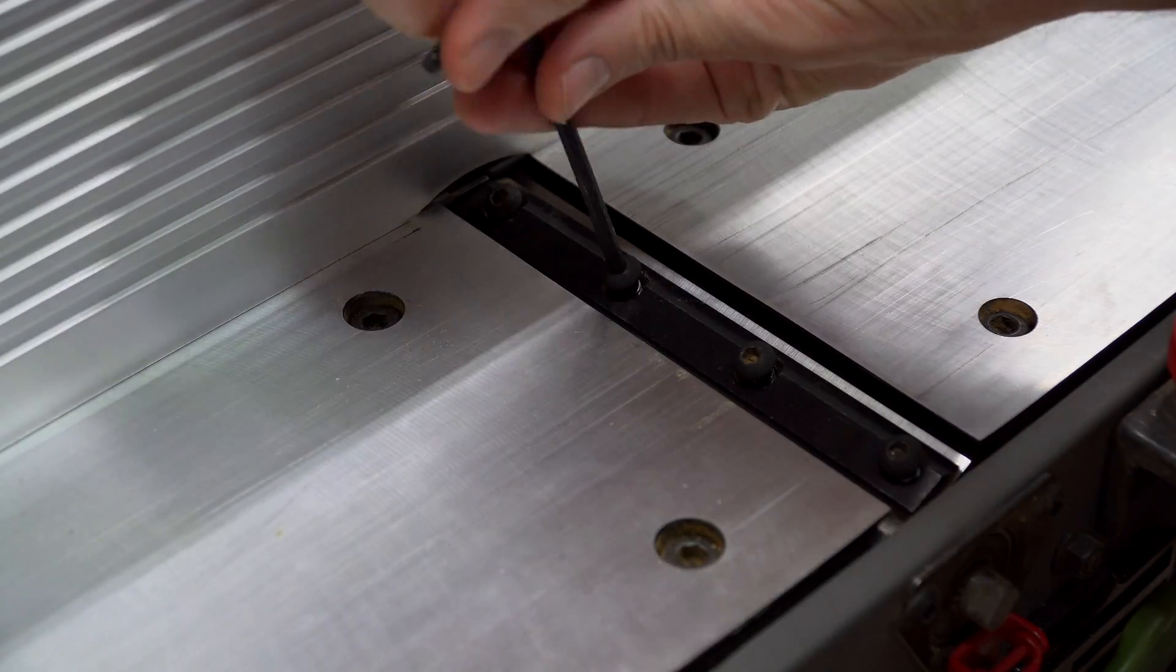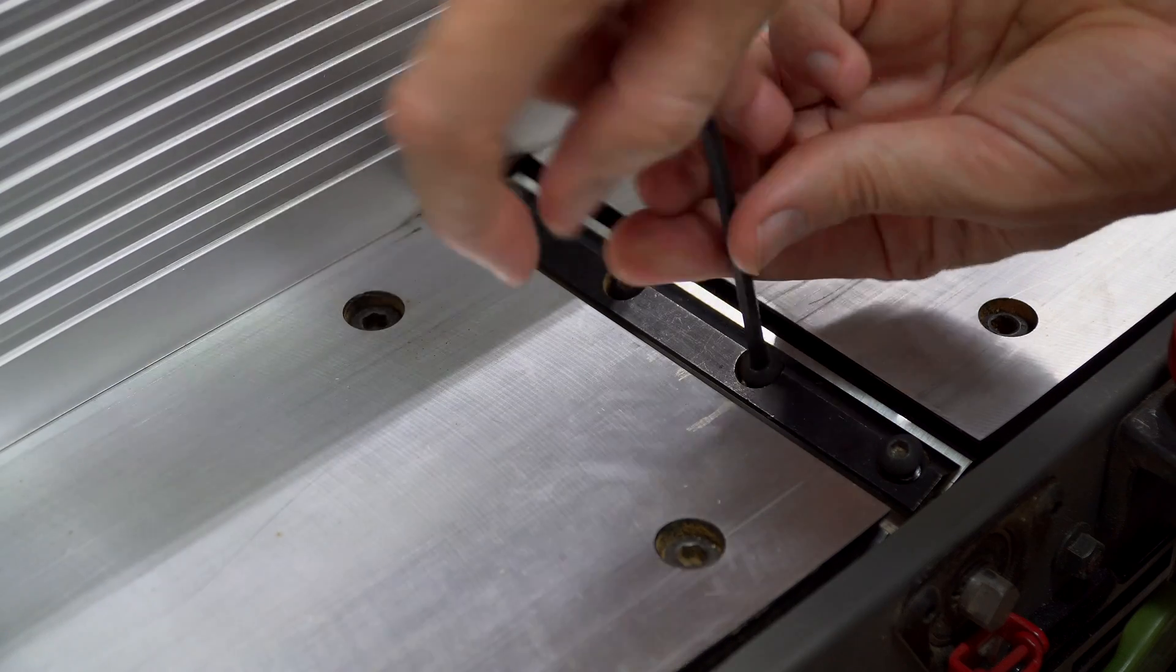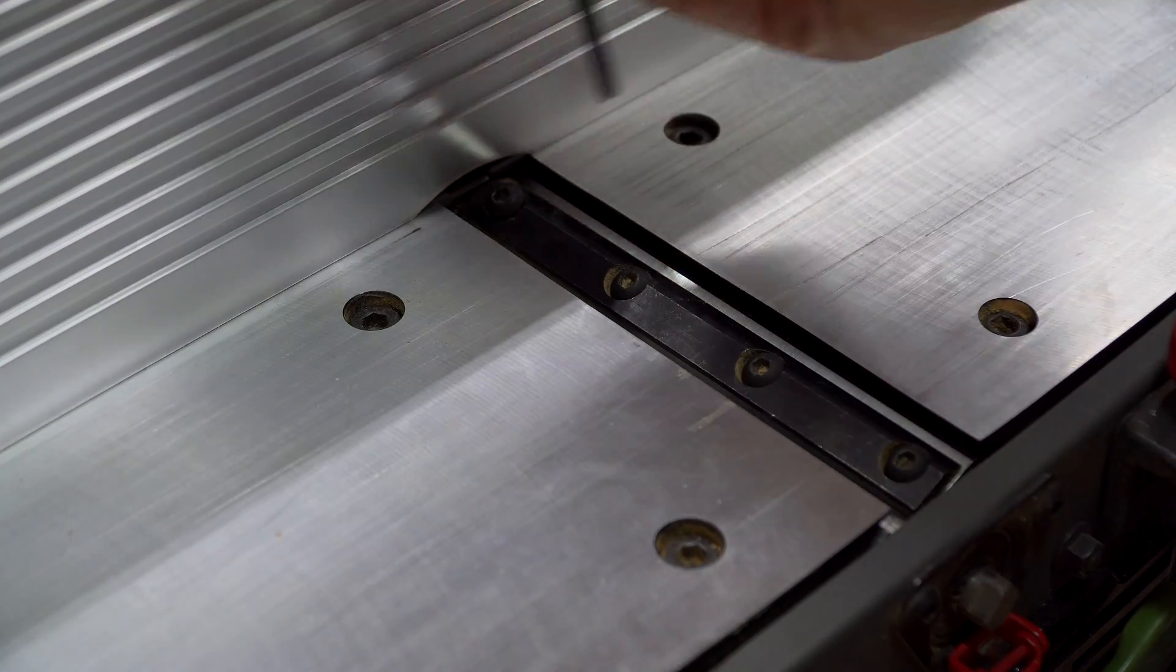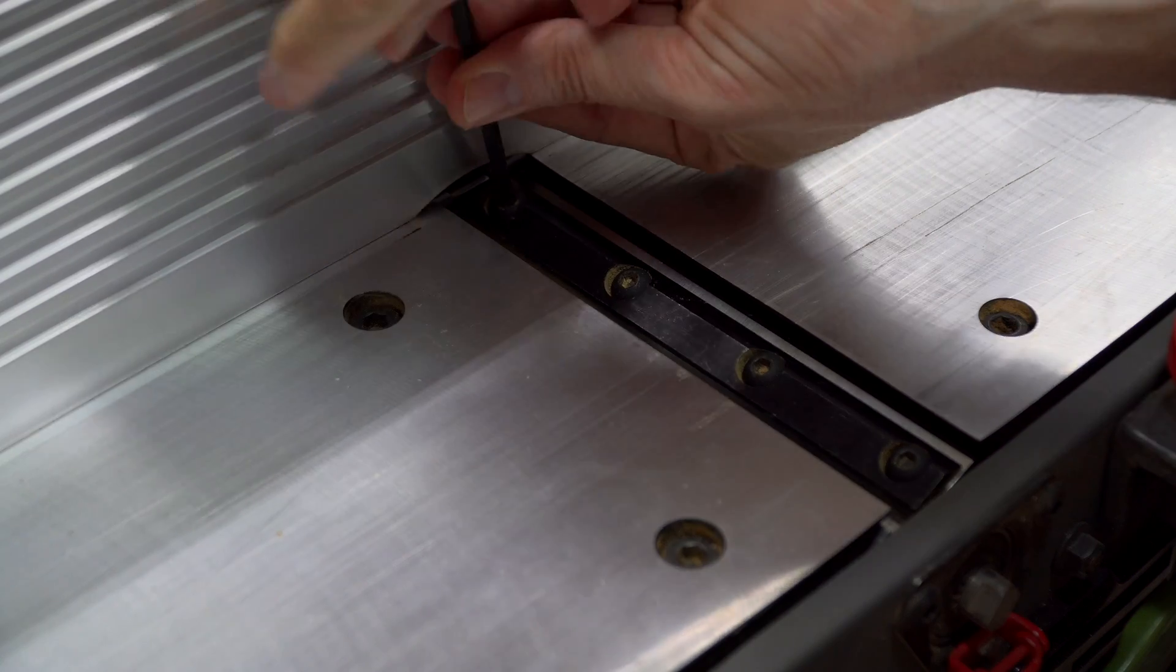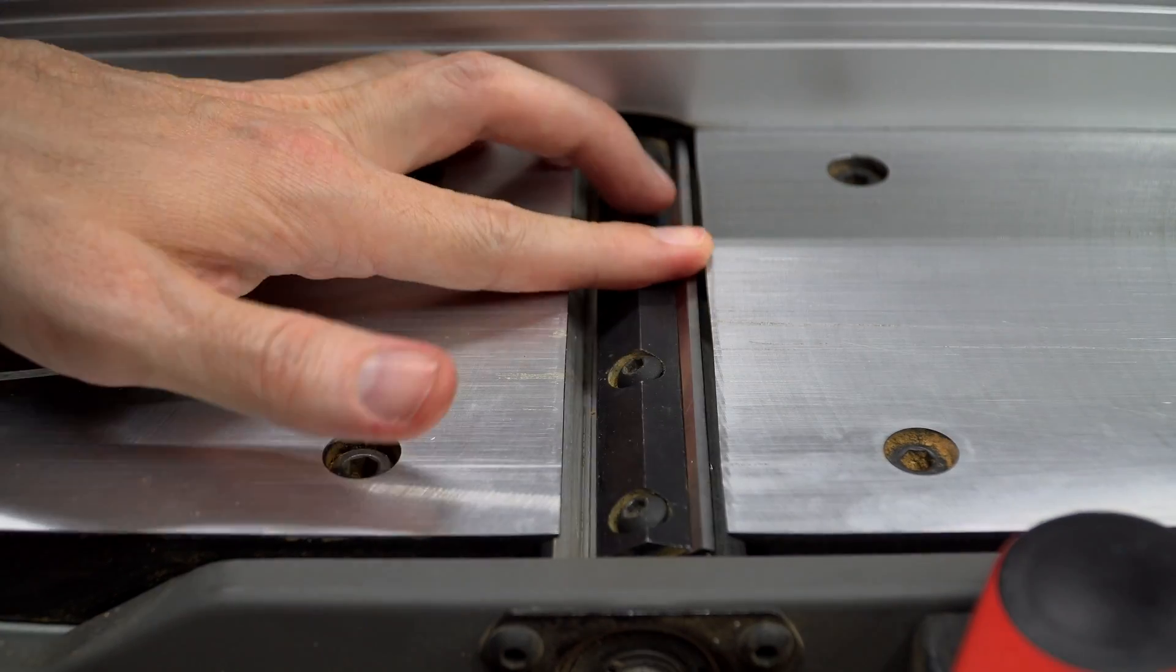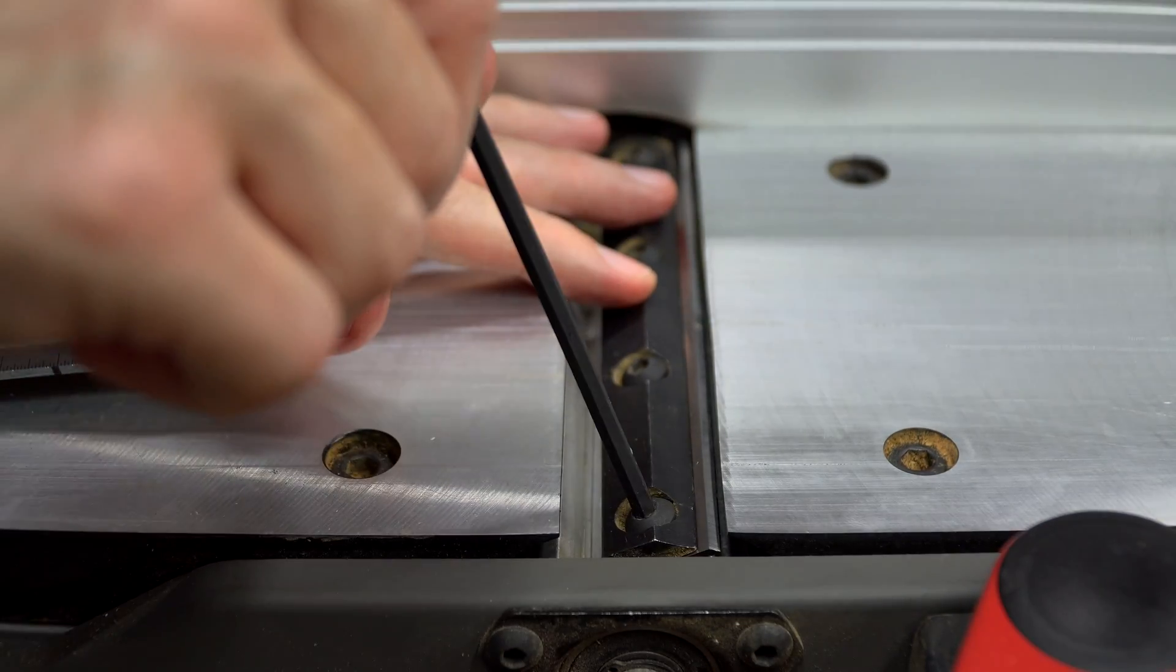You'll want to tighten the screws until they make contact, but don't fully tighten them down yet. If the blade has wiggle room, then it's too loose. You need it to be tight enough that it doesn't wiggle, but no tighter than that.